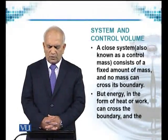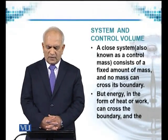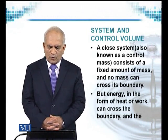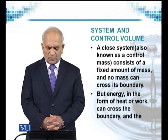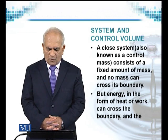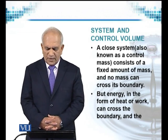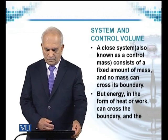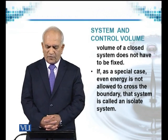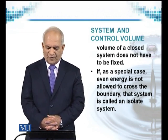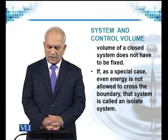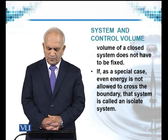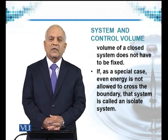A closed system, known as a control mass, consists of a fixed amount of mass and no mass can cross its boundary. But energy in the form of heat or work can cross the boundary, and the volume of a closed system does not have to be fixed. If, as a special case, even energy is not allowed to cross the boundary, that system is called an isolated system.